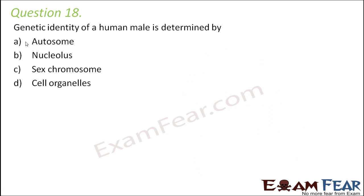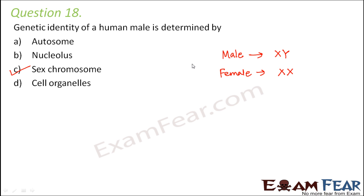Question number 18. The genetic identity of a human male is determined by: autosome, nucleolus, sex chromosome, or cell organelles? Whenever we talk about the genetic identity of a human male, what makes a human being male or female is determined by the sex chromosomes. For a male it is XY, and for a female it is XX. Both male and female have 46 chromosomes total — 44 autosomes and 2 sex chromosomes. The 44 autosomes look exactly similar; the only difference is in the sex chromosomes.